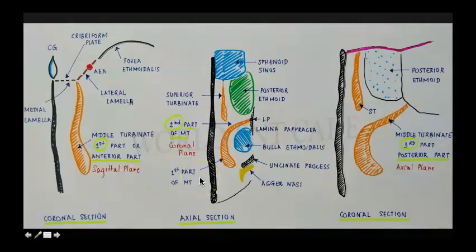So these pictures again show you the different parts of the middle turbinate. So first you have the first part of middle turbinate, the anterior one-third. It is present in a sagittal plane.